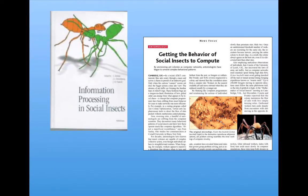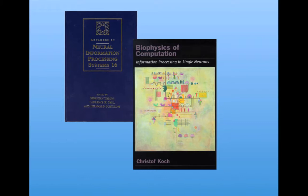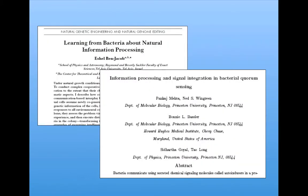In this literature, we see books called Information Processing in Social Insects, papers in journals such as Nature on getting the behavior of social insects to compute. As far as the brain is concerned, we see books about neural information processing systems, the biophysics of computation. Bacteria play a role too. People are now talking about information processing in bacteria, particularly with respect to the phenomenon called quorum sensing, which we didn't cover here.